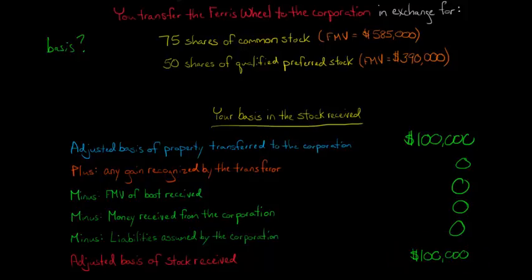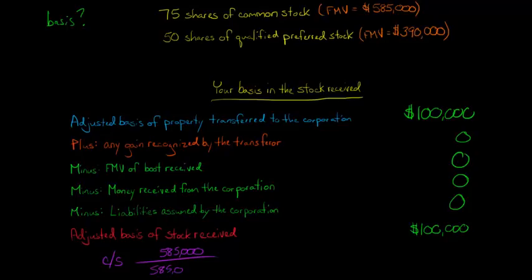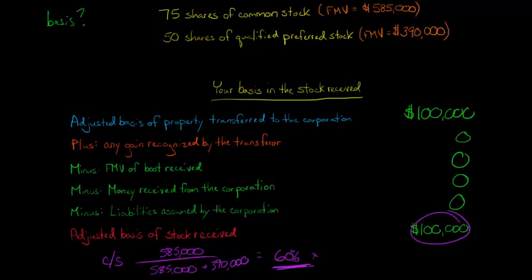We're going to allocate this $100,000 based on the relative fair market values of each class of stock. For the common stock, we take $585,000 and divide it by $585,000 plus $390,000. That gives you 0.6, or 60%. This is saying 60% of the basis is going to be allocated to the common stock. So we multiply 60% by the $100,000 total basis, giving us $60,000 allocated to the common stock.